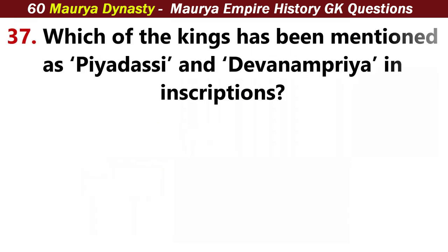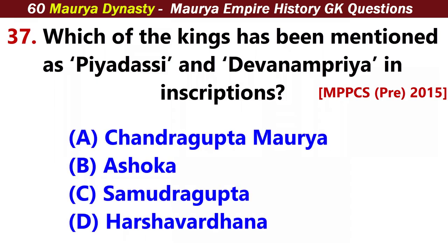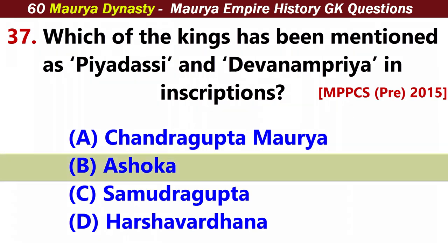Which of the following kings has been mentioned as Priyadarshi and Devanampiya in inscriptions? Answer B: Ashoka.